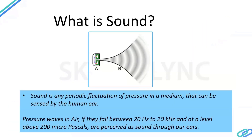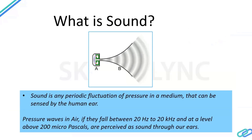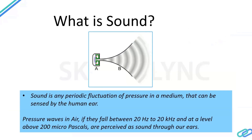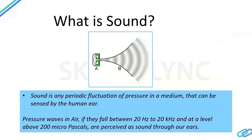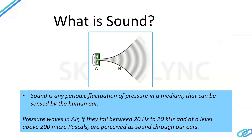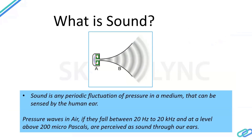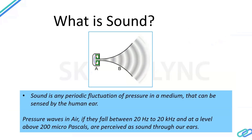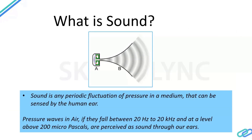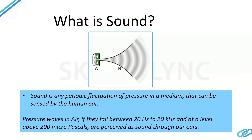As a refresher on definitions - what do we mean by sound? Sound, as I define it, is any periodic fluctuation of pressure in the medium that can be sensed by the human ear. Pressure waves in air that fall between 20 Hz to 20 kHz, and if they have a certain threshold level of 20 micropascals, we are able to perceive those mechanical waves in the fluid medium - the air - as sound through our ears.